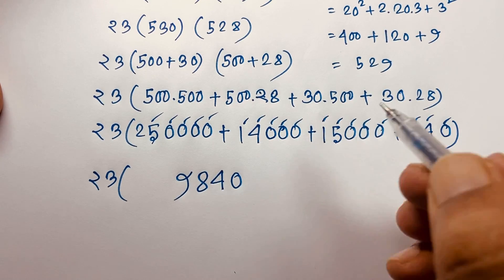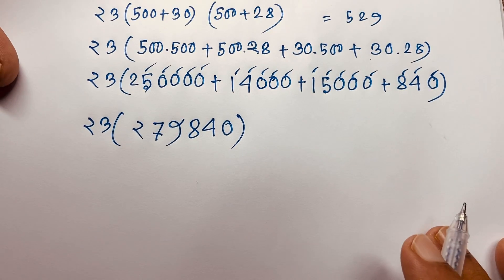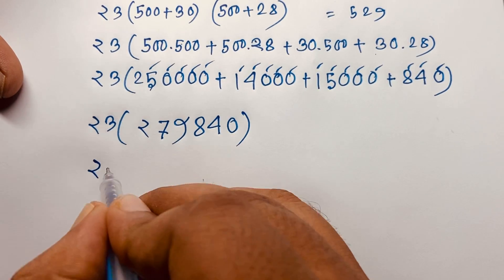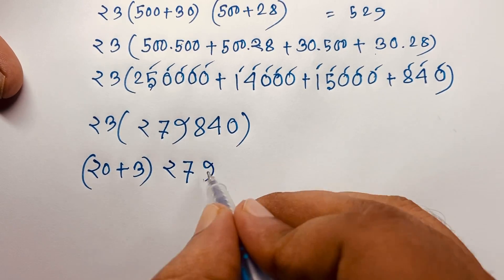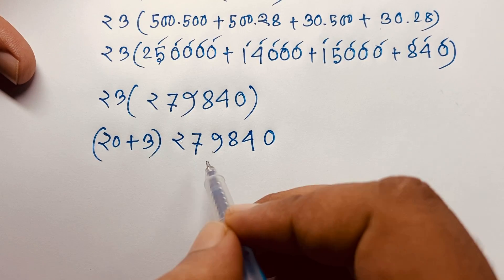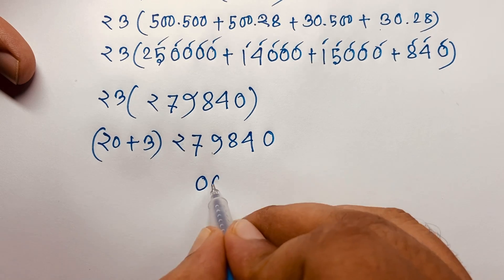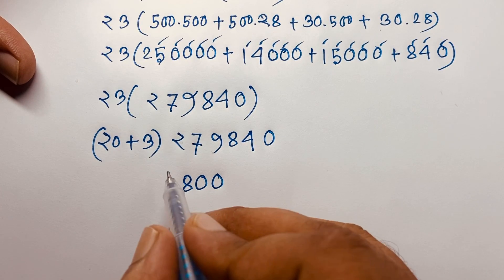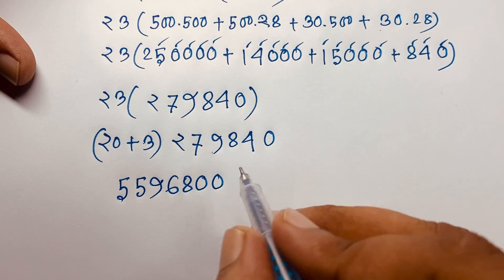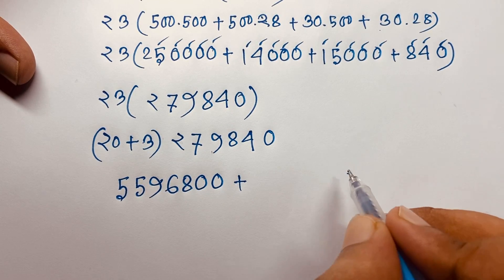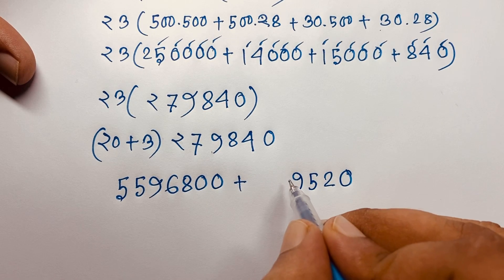Continuing step by step: 23 times the result. I write 23 as 20 plus 3 and solve step by step. Here is 23, 279, 840. Computing each partial product carefully to simplify the full expression without a calculator.